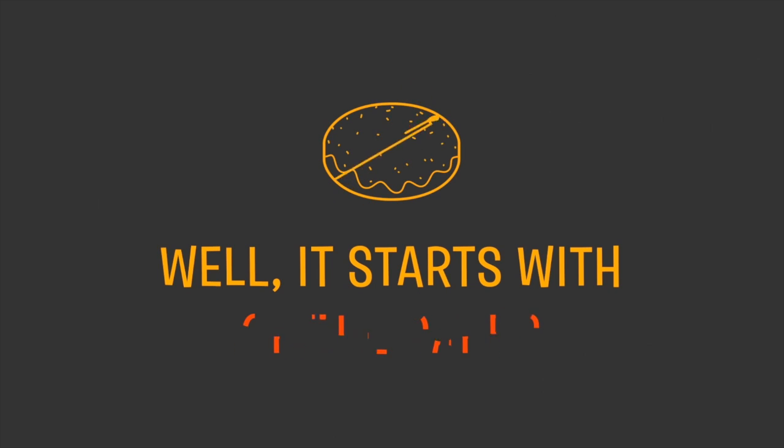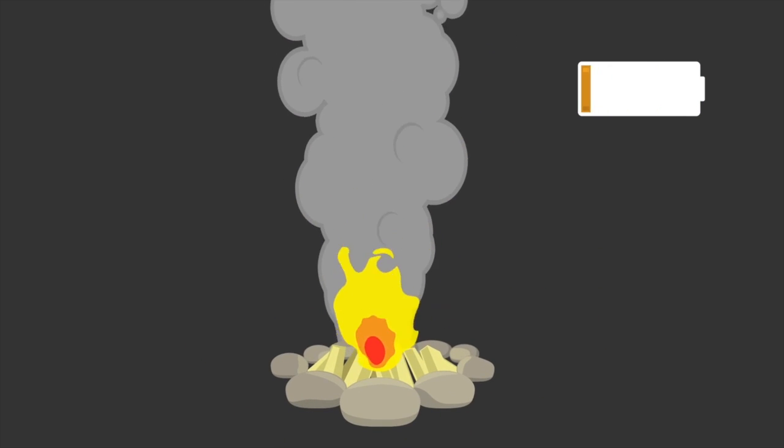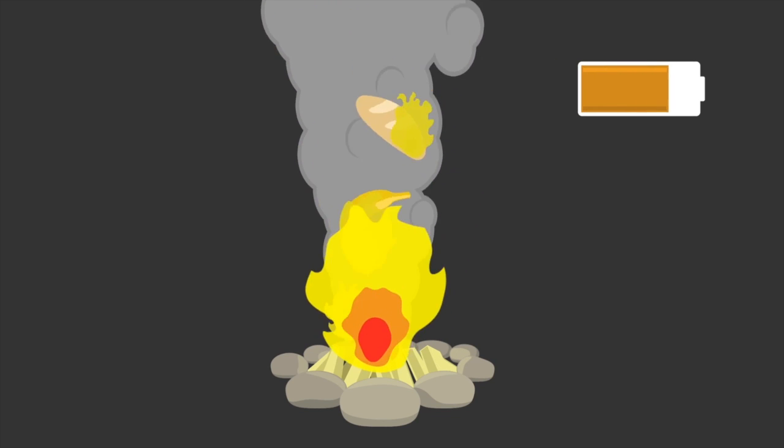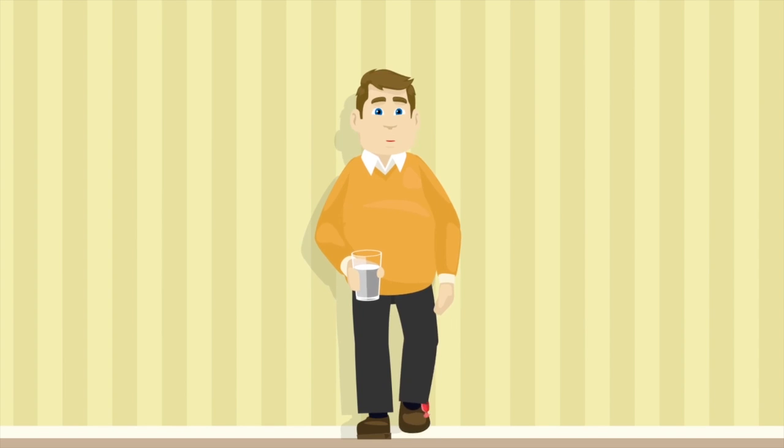So why is it so hard? Well it starts with the kindling or the carbs. We eat some but they quickly burn off, causing our energy to drop and giving us cravings for more. We can keep throwing these sticks on the fire but they will burn fast and never give us the consistent warmth or energy that we need.